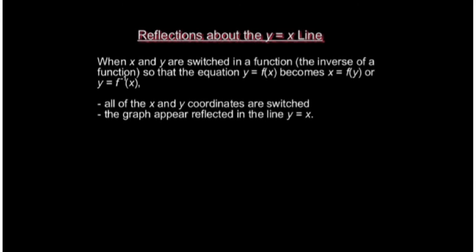This means if you have the point 2, 5, the point will become 5, 2. You switch your x and y coordinates, and the graph will appear to reflect in the line y equals x.